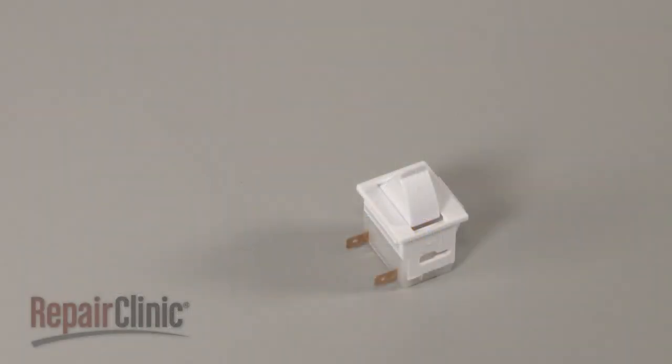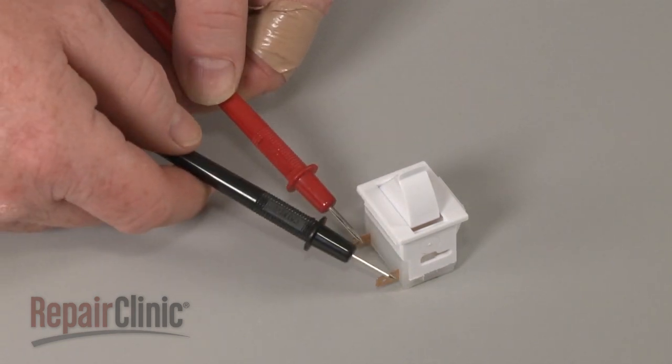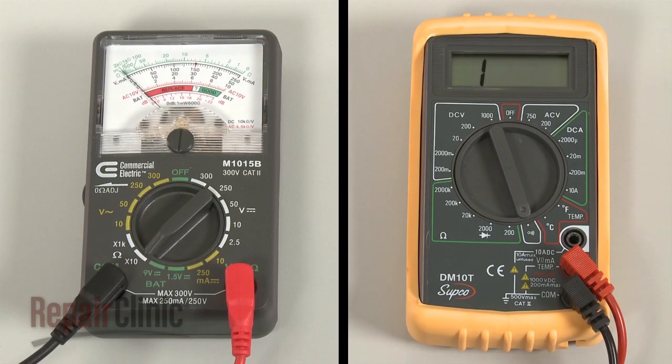In this example, we will test a normally closed switch. Use a probe to touch one of the terminals and the other probe to touch the second terminal. If the meter reading shows zero ohms of resistance, the switch has continuity.